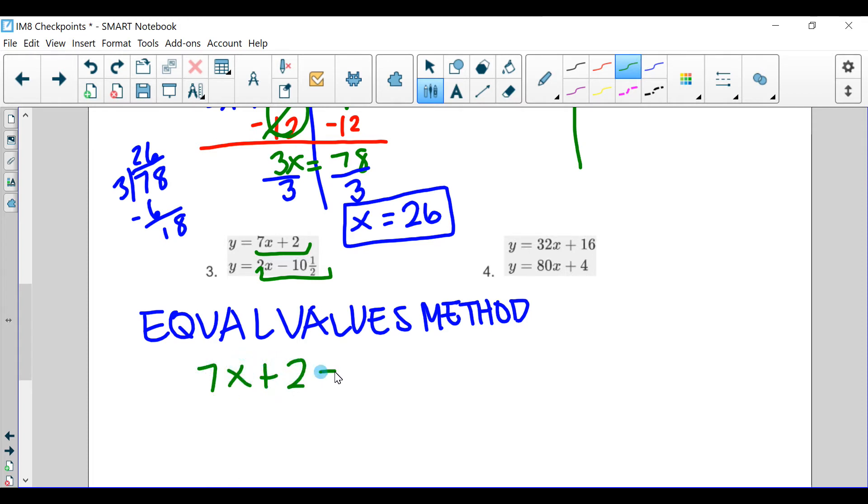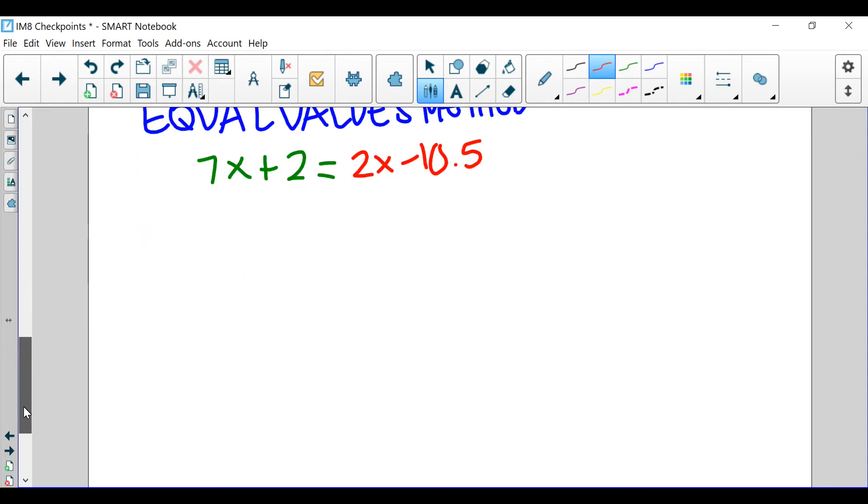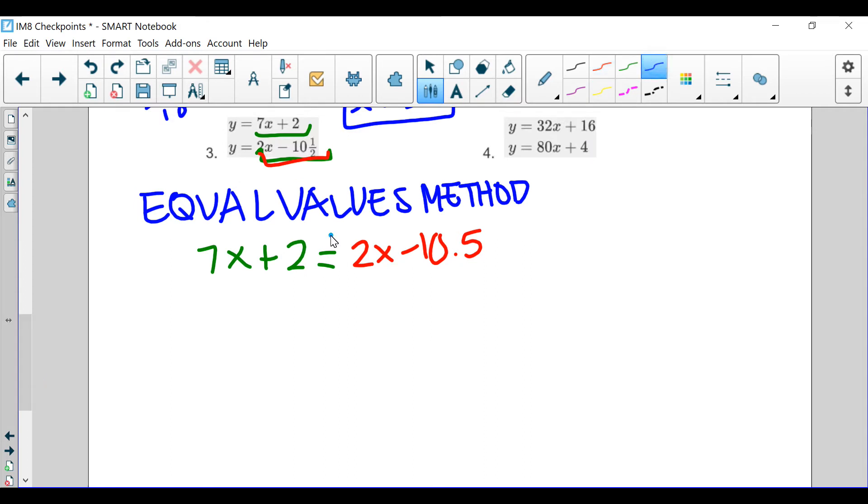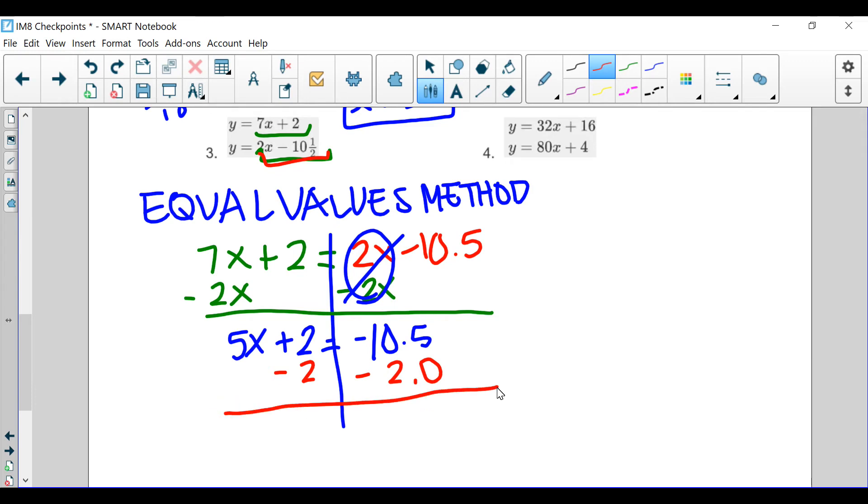By doing 7x plus 2 is equal to, what's over here? 2x minus 10 and 5 tenths. Then, we're going to go ahead and draw this line. We're going to notice that the x's can be taken out. We end up with 0 over here. So, 5x plus 2 is equal to negative 10.5. Then, we're going to go ahead and subtract that 2. What we do to one side, do the other. Keep in mind, when you subtract the 2, you want to make sure that it's 2.0, not 0.2. That's a common mistake. Then, this goes away.